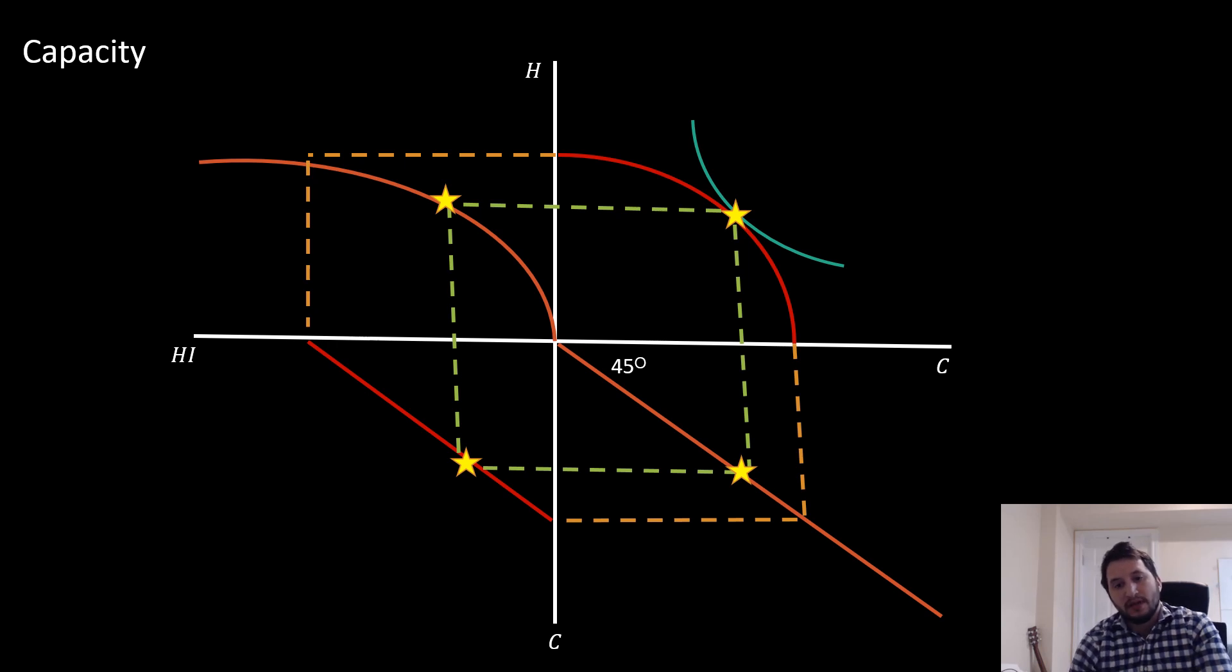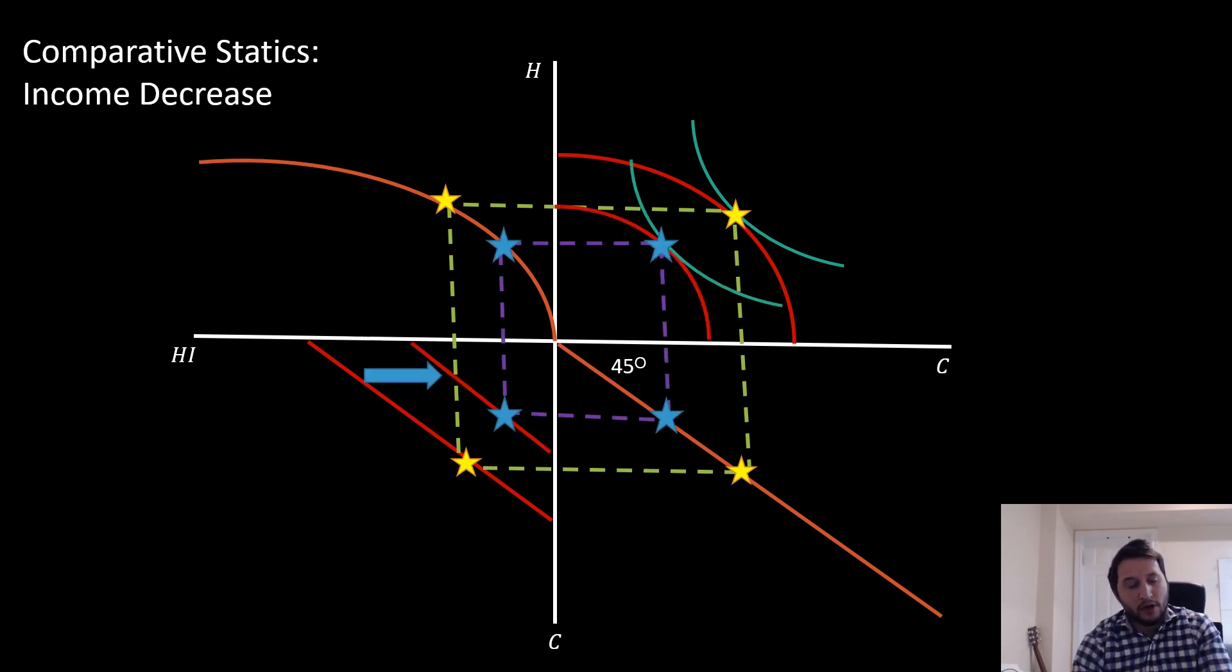Doing some comparative statics: if we see an income decrease, first we see a shift back in our budget line. That's going to have implications for our PPF, reducing the level of utility and a lower level of production. All in all, we see a smaller square.